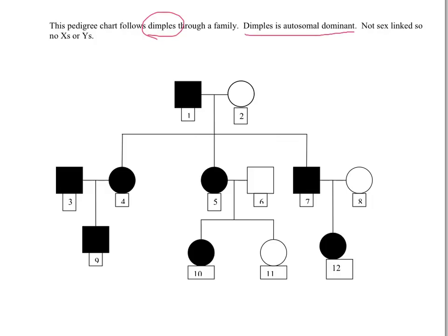And if we use D's for dimples, we could say each individual could be homozygous dominant, heterozygous, or homozygous recessive. So our task is going to be to determine what genotype all these individuals are. Now, because it says it's following dimples through the family, that means that everything shaded in is an individual that has dimples. If that's the case, each one of these people are going to have at least one dominant gene. Your job is to see if you can figure out what the second gene is.